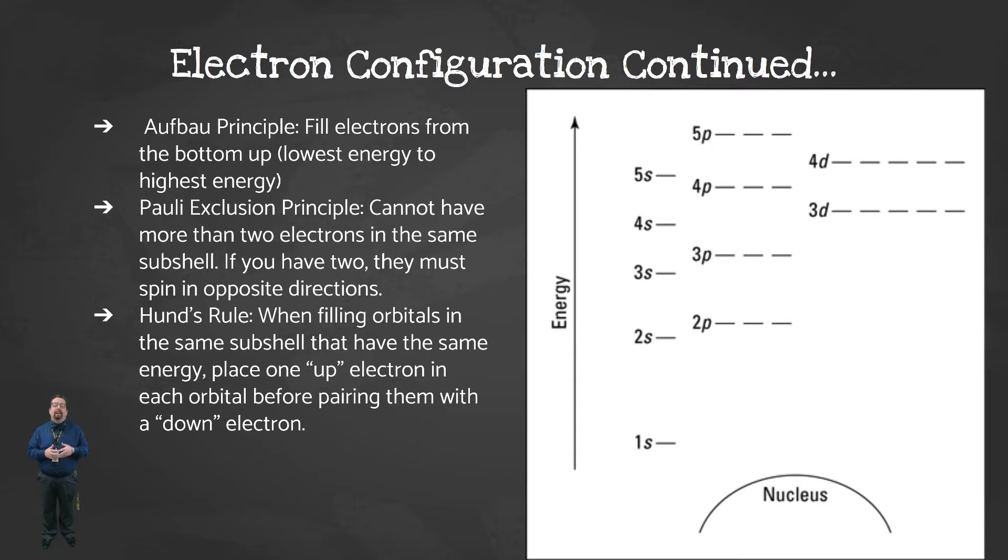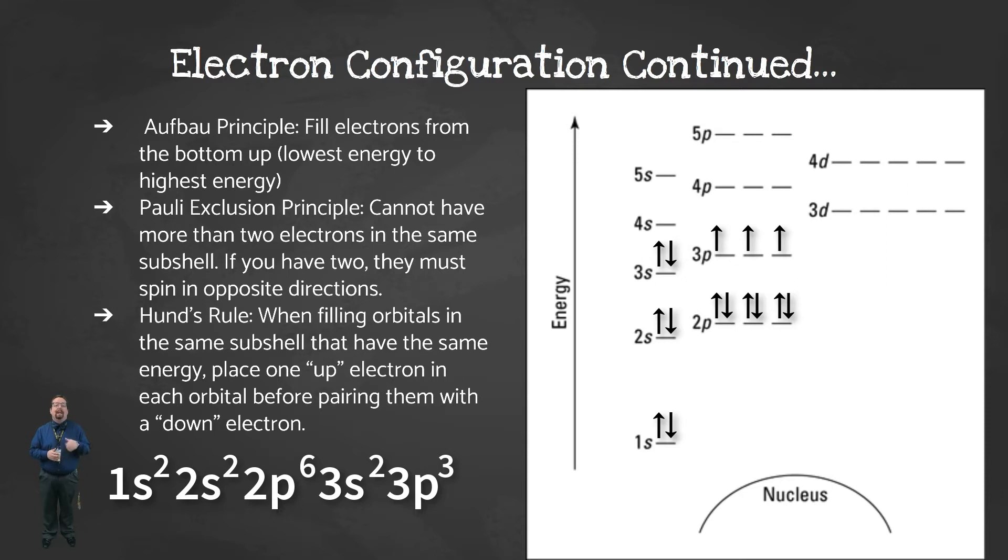For example, if we were to write the electron configuration for phosphorus, you'd start down here at the 1s and place electrons as follows. Phosphorus has 15 protons, so it has 15 electrons when it's an atom. Once you get your electrons filled in, you'd write out the electron configuration, naming each energy level and sublevel with an exponent that corresponds to how many electrons are in that sublevel, like this.